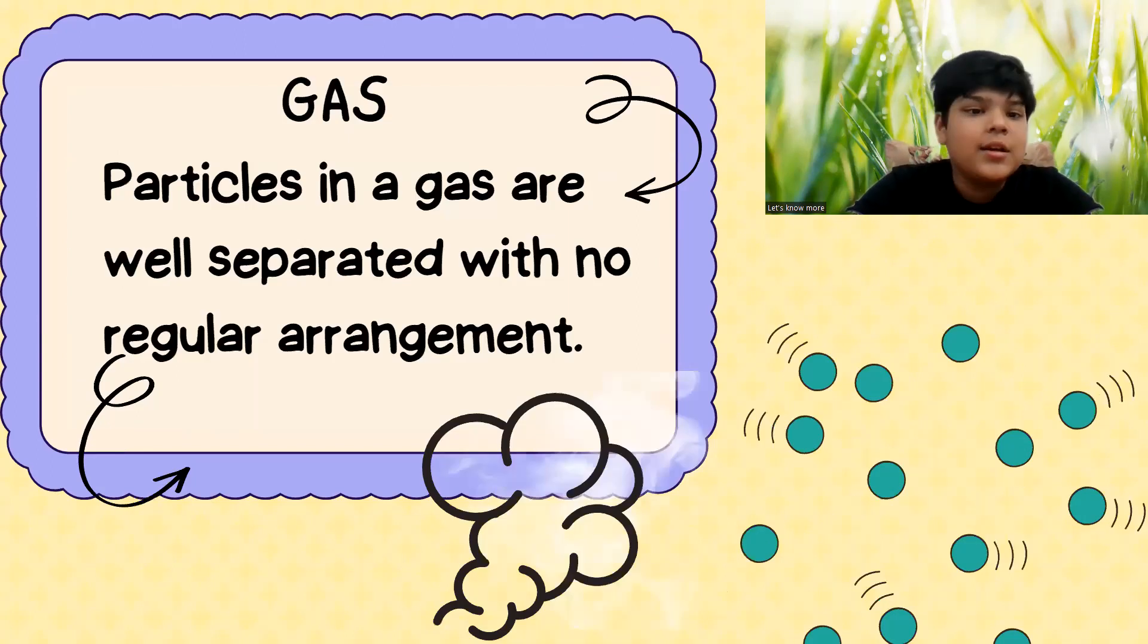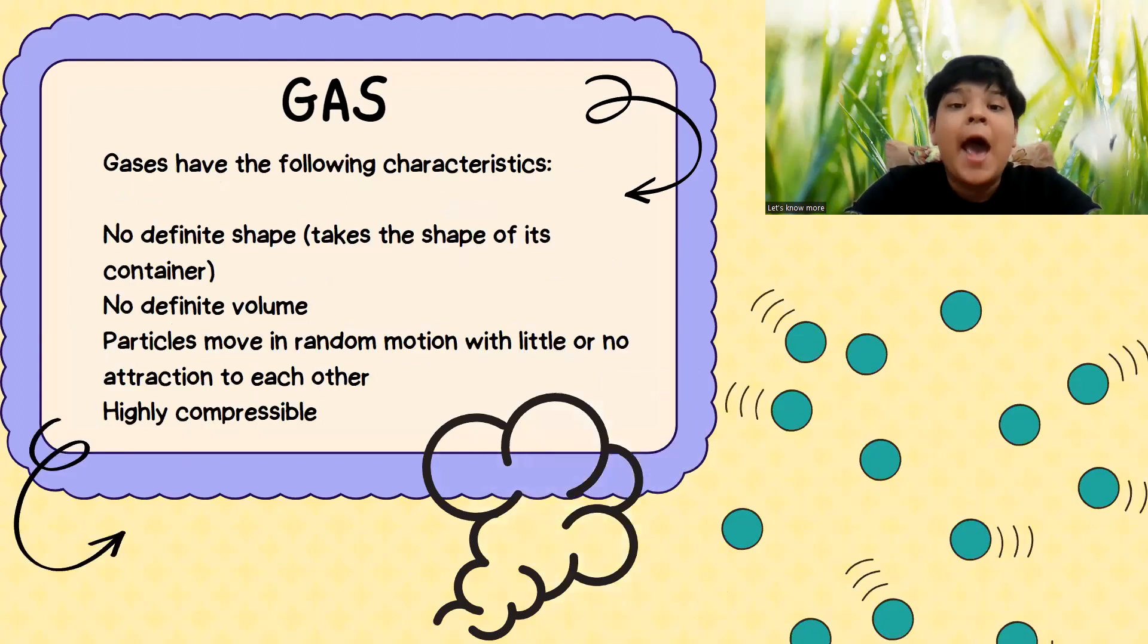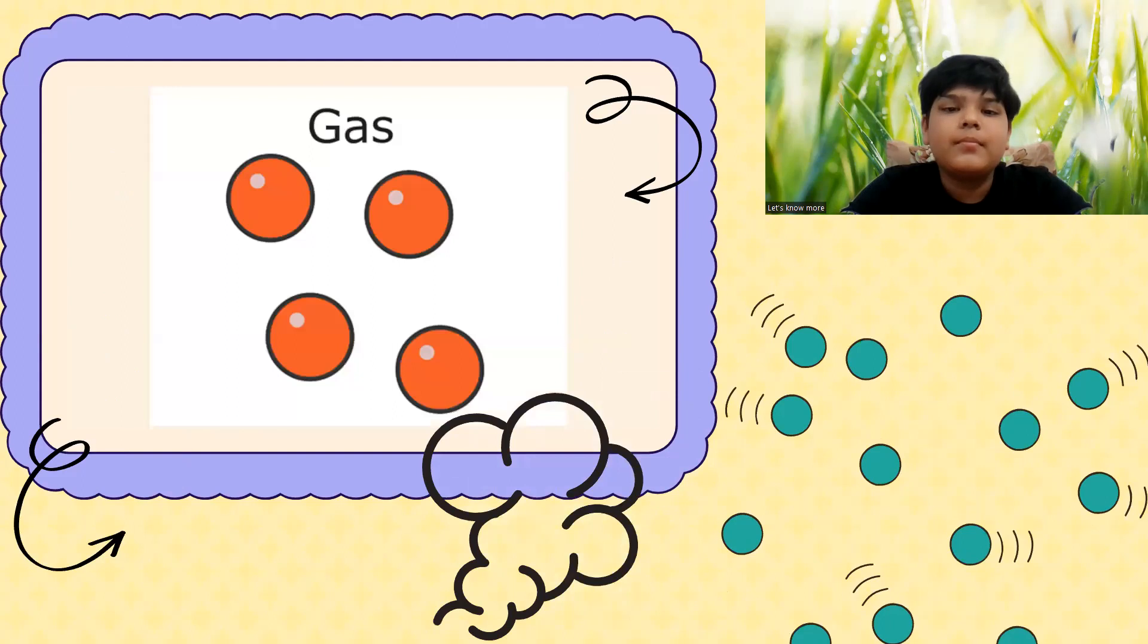Gas. Particles in a gas are well separated with no regular arrangement. Gases have the following characteristics: no definite shape, takes the shape of its container, no definite volume. Particles move in a random motion with little or no attraction to each other. Gases are highly compressible. This is the arrangement of molecules in a gas substance.